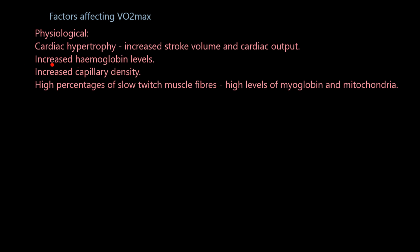We can increase the number of capillaries in muscles and lungs — increasing capillary density, also known as capillarization. High percentages of slow twitch muscle fibres also help, as they're naturally built for endurance. They have high levels of myoglobin, which stores oxygen in the muscles — just as haemoglobin holds oxygen in the blood — and more mitochondria, which produce energy aerobically. Training that increases all of these factors will get more oxygen into the system and into the muscles, thereby increasing VO2max.